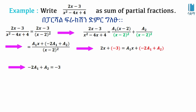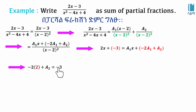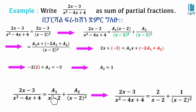For the constant term: negative 3 equals negative 2 times A1 plus A2. Substituting A1 equals 2 gives negative 2 times 2 equals negative 4, so negative 4 plus A2 equals negative 3, giving A2 equals 1. Therefore: 2x minus 3 over x squared minus 4x plus 4 equals 2 over x minus 2 plus 1 over x minus 2 squared.